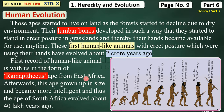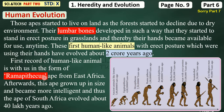The first record of human-like animals is with us in the form of Ramapithecus, from East Africa. So in East Africa there was a Ramapithecus, which evolved from Dryopithecus. This means there were two species — one is a monkey and one is an ape. So we didn't come from the monkey. Ramapithecus is the first evidence.